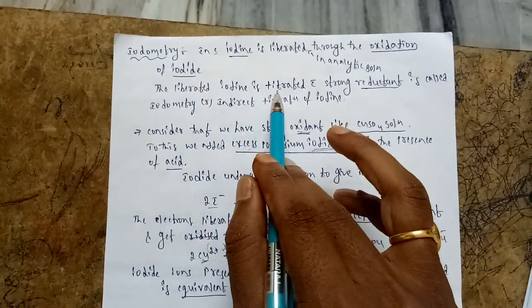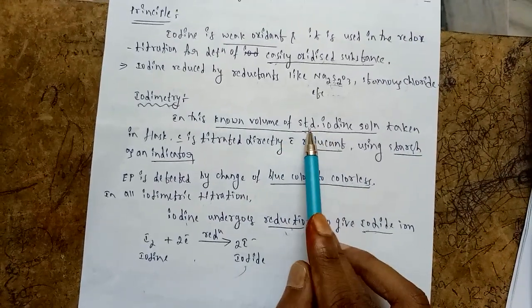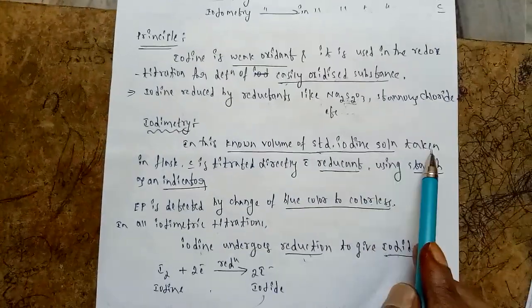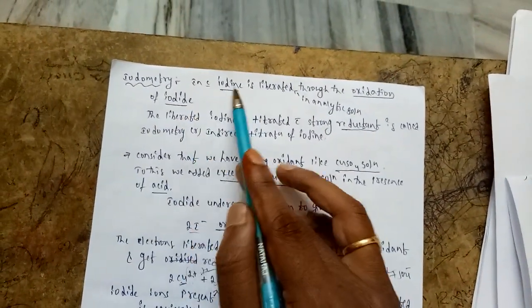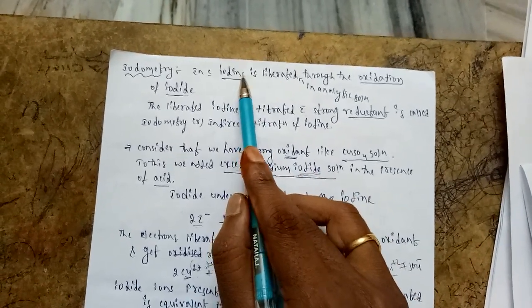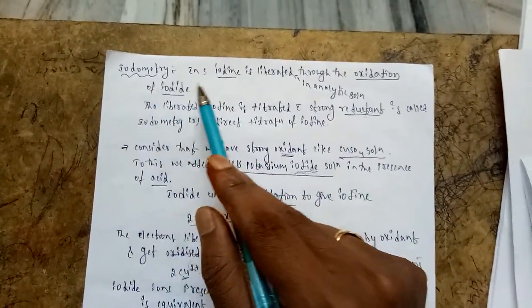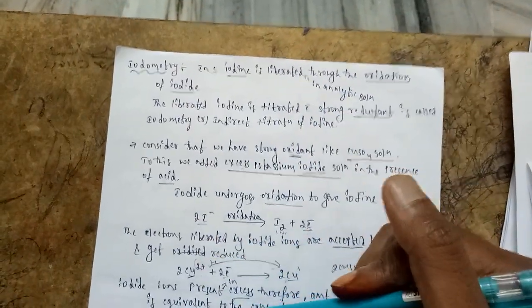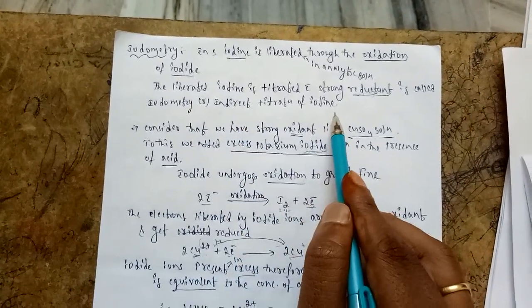In iodimetry, we take standard iodine solution directly in the conical flask and titrate with reductant — that's direct determination. In iodometry, first iodide is converted to iodine form due to oxidation, and only after that is iodine titrated with reductant — that's why it is indirect titration. We are not taking iodine directly in iodine form. Iodometry is therefore also known as indirect titration of iodine.